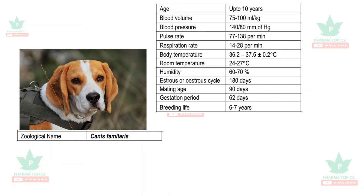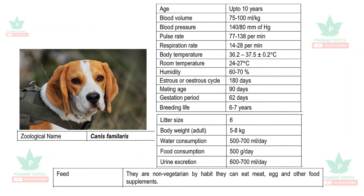The dog data: lifespan is up to 10 years, blood volume is 75 to 100 ml per kg, body temperature is 36.2 to 37.5°C, estrus cycle is 180 days, gestation period is 62 days, and breeding life is six to seven years. Litter size is six pups per pregnancy, body weight is five to eight kg, water consumption is 500 to 700 ml per day, food consumption is around half a kg per day, and urine excretion is 600 to 700 ml per day. Dogs are non-vegetarian and can eat meat, eggs, and other food supplements.